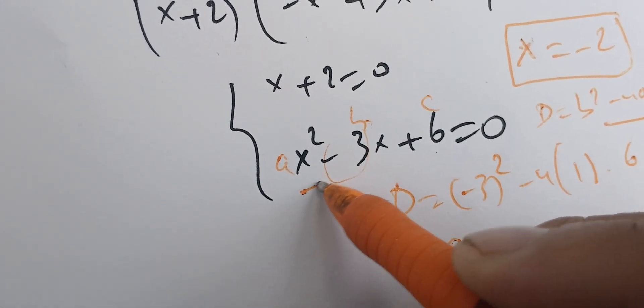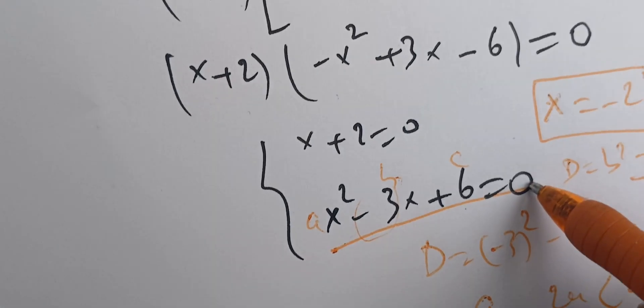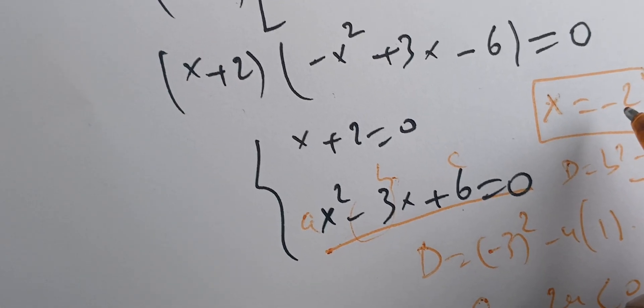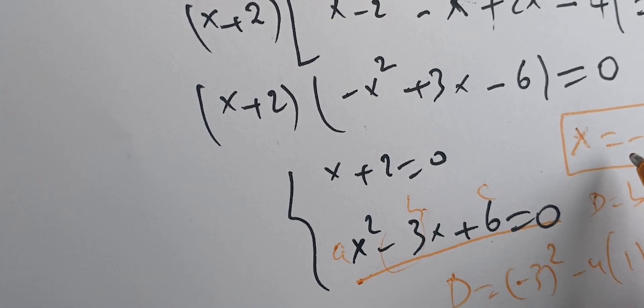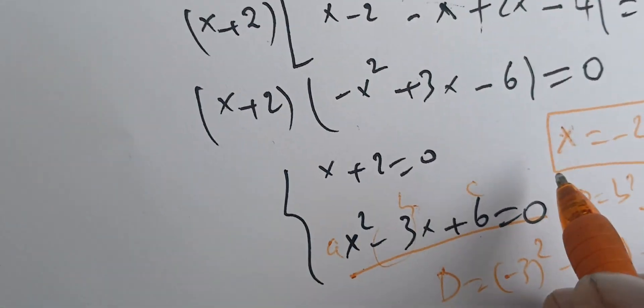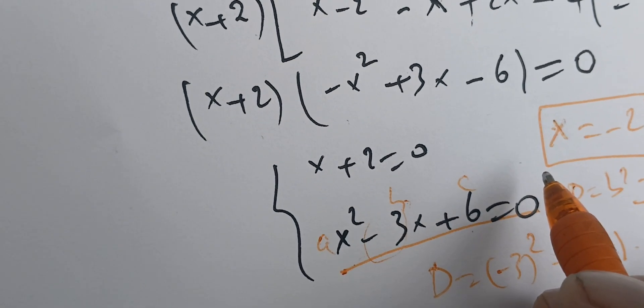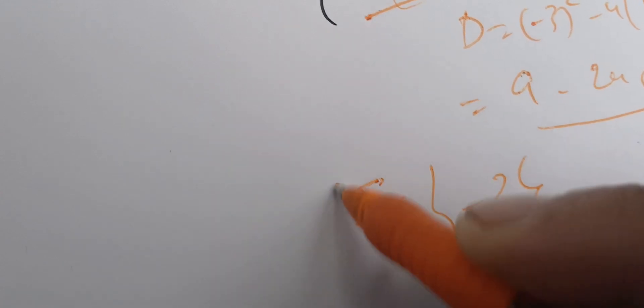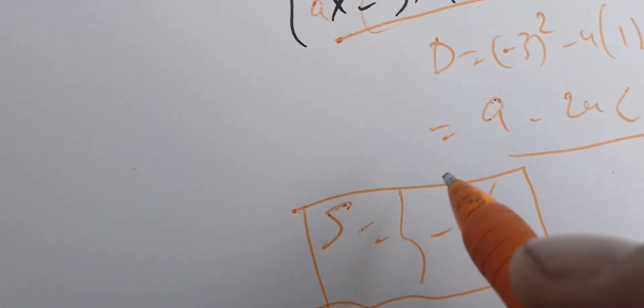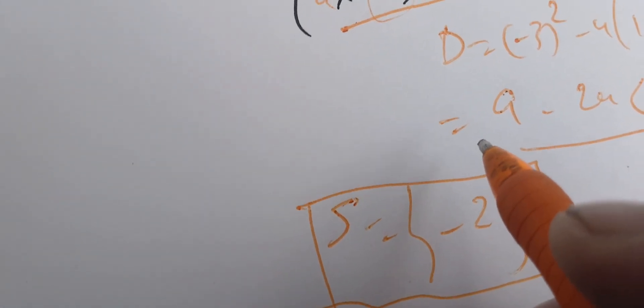This means that the only solution we have is minus 2. We tried and found that minus 2 satisfies this equation, and this means the set of solutions is minus 2. We only care about real solutions.